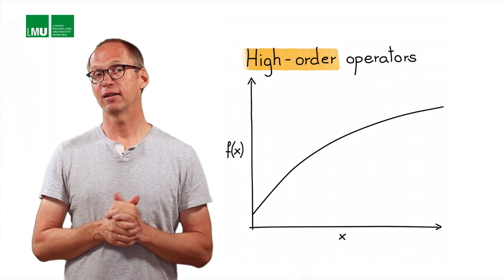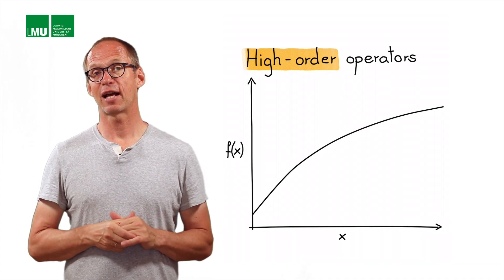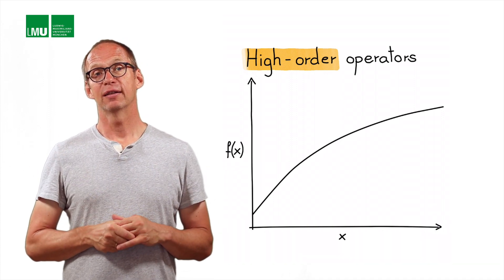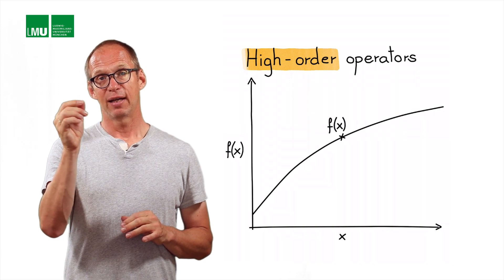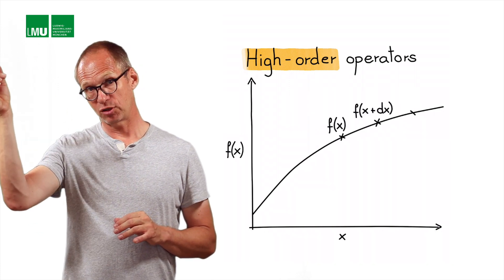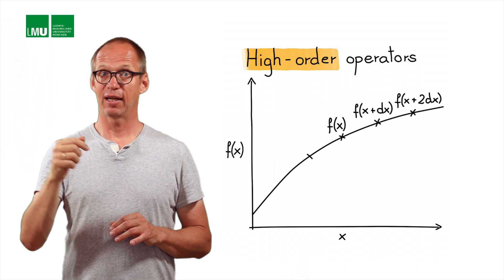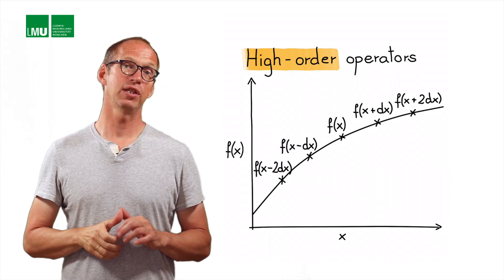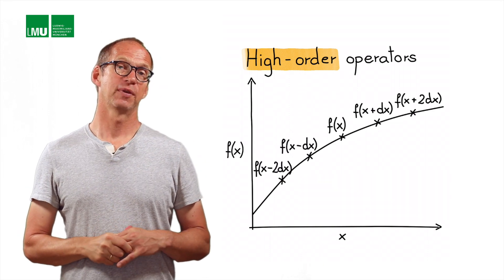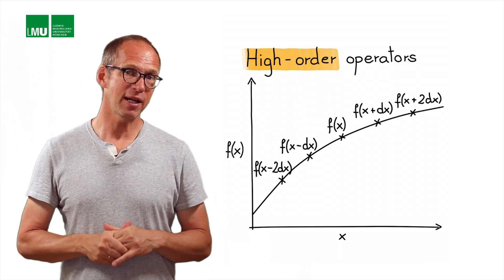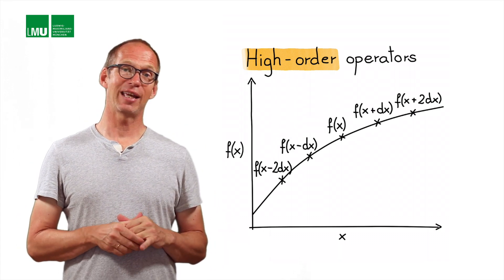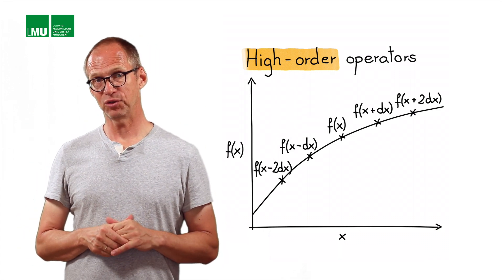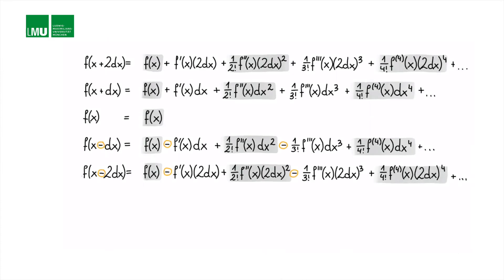Let's take as an example the points x, x plus dx, x plus 2dx on one side, and x minus dx and x minus 2dx on the other side. As you probably already expect, we again use Taylor series to do that, and we simply write down the Taylor series for these five points.